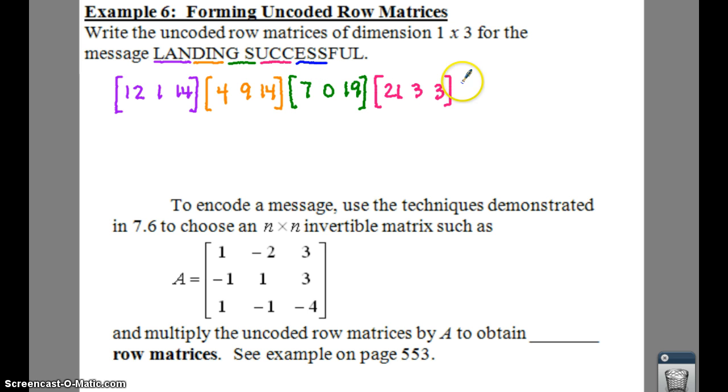Next, we have ESS. So E is 5. SS would be 19, 19.